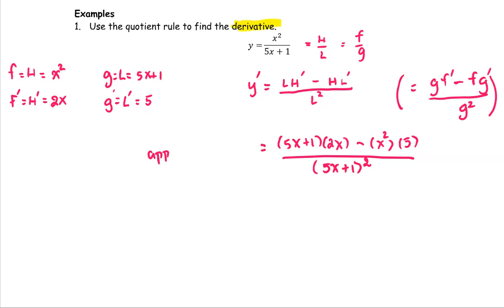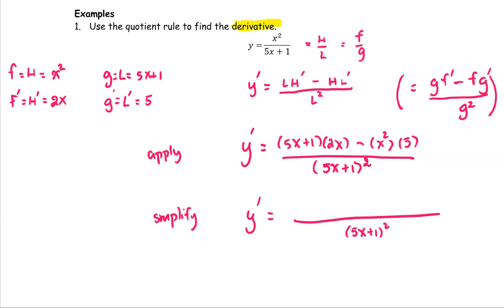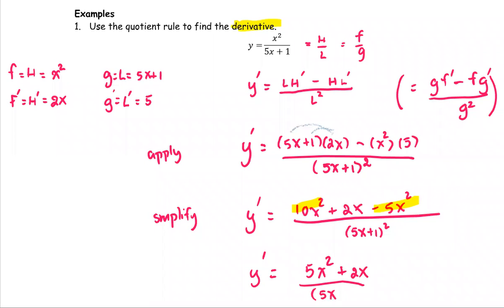We apply the quotient rule, then simplify. Leave the denominator as is and expand the numerator: distribute 2x to get 10x squared plus 2x, then subtract 5x squared from the second term. Combining like terms, 10x squared minus 5x squared gives 5x squared, so y prime simplifies to 5x squared plus 2x, all divided by the quantity 5x plus 1 squared. This is the derivative of y using the quotient rule.